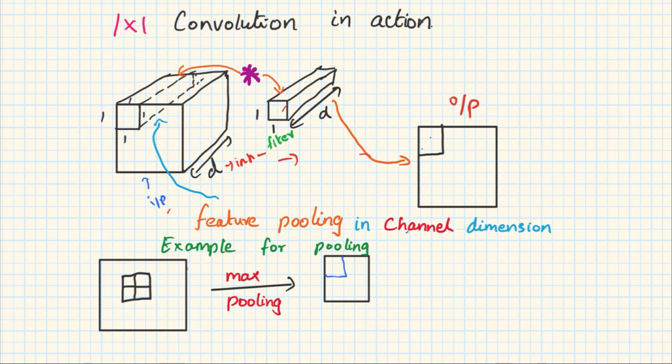So it's similar to the pooling function that we have seen earlier. For example, let's look into max pooling. This is an input and this is a max pooling filter 2 by 2, and this particular operation produces a single output in the output tensor. Likewise, if you look into 1 by 1 convolution, it operates across D inputs and produces a single output in the output channel. So in this way it acts as a feature pooling in the channel dimension.